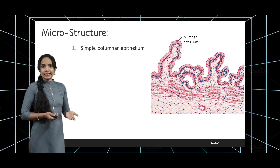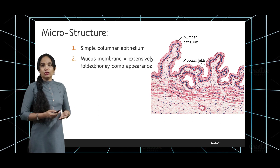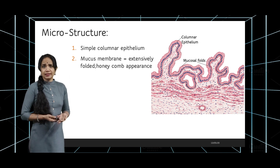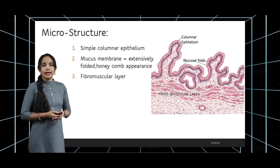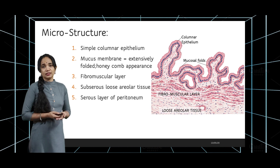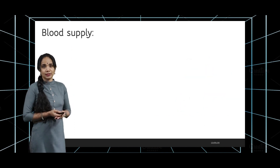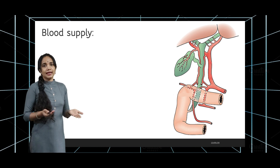Regarding microstructure, the lumen of the gallbladder is lined by simple columnar epithelium, below which is the lamina propria. The epithelium lines a mucous membrane that is extensively folded — which is why the gallbladder has a honeycomb appearance. There is a fibromuscular layer within the lamina propria, below that a subserous loose areolar tissue layer, and the outermost covering is a serous layer of peritoneum at the fundus and adventitia where the gallbladder contacts the fossa.